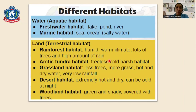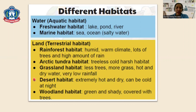For example, in freshwater habitats such as lakes, ponds, and rivers the water is fresh, while in marine habitats such as seas and oceans the water is salty. On land, the rainforest is humid, warm, with lots of trees and high rainfall. The Arctic is cold and harsh. Grassland has fewer trees, more grass, and is hot and dry.